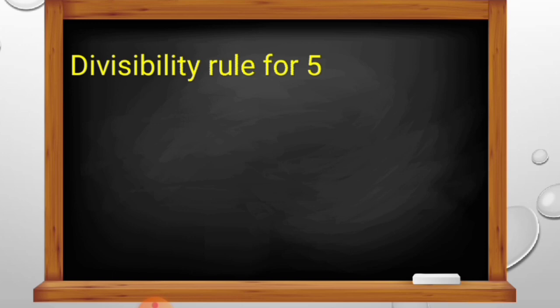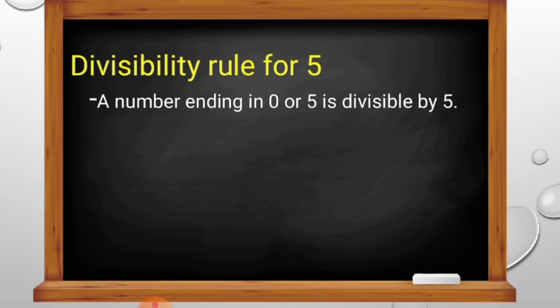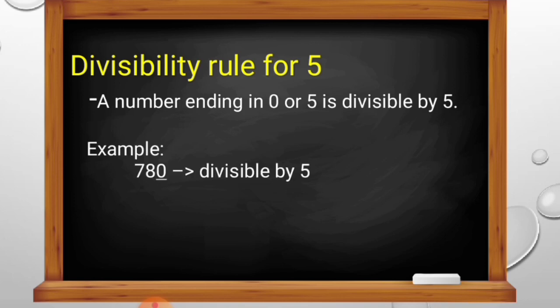Now let's take a look at the divisibility rule for 5. This is so easy. A number ending in 0 or 5 is divisible by 5. For example, 780 — the last digit of 780 is 0, therefore 780 is divisible by 5. Another example is 295. The last digit of 295 is 5, therefore 295 is divisible by 5.